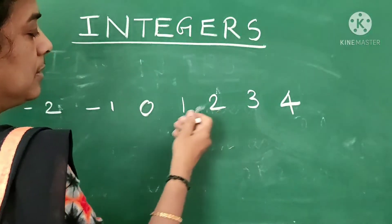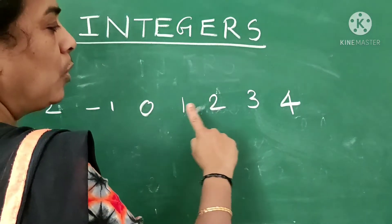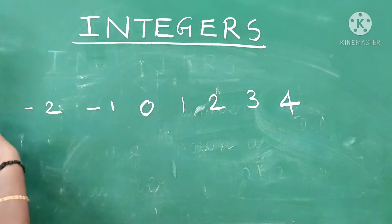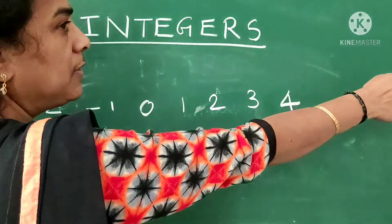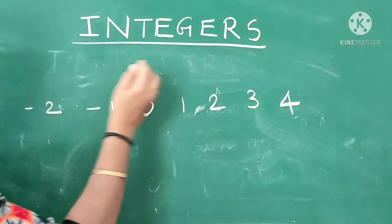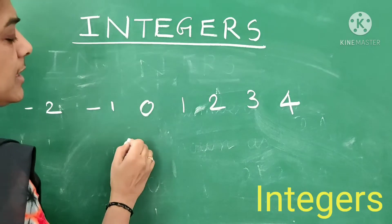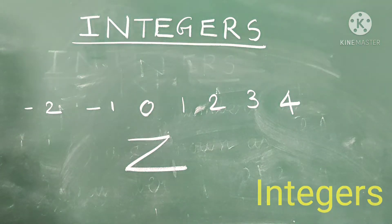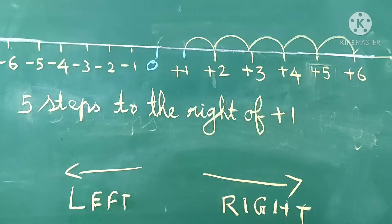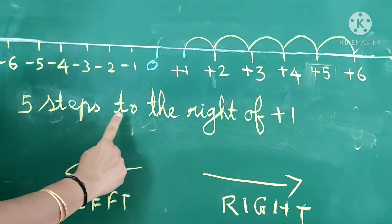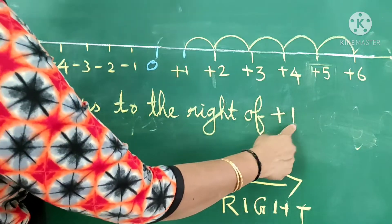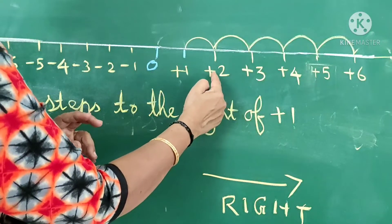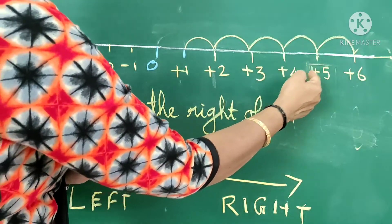Whole numbers with negative numbers — negative 1, negative 2, negative 3 — are infinite on this side. And positive numbers are also infinite. All together, that is known as integers. Integers can be represented as capital Z.